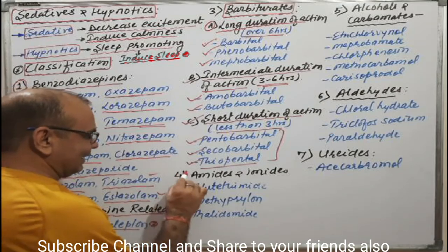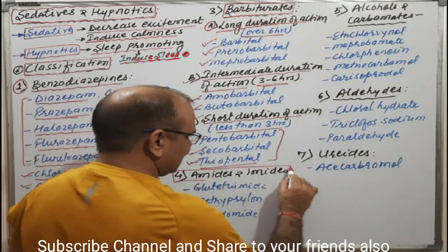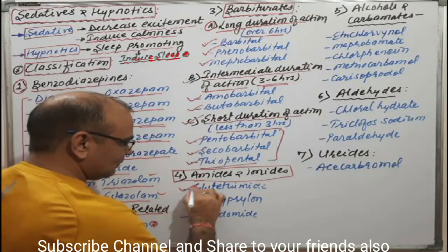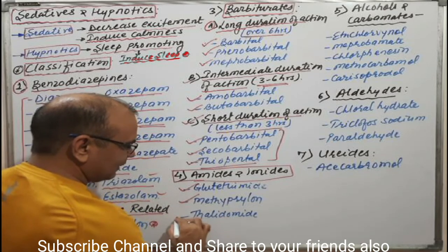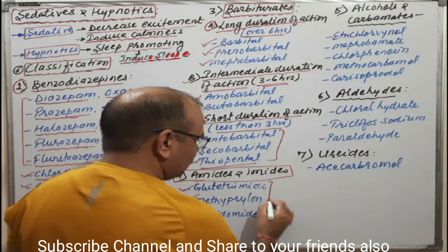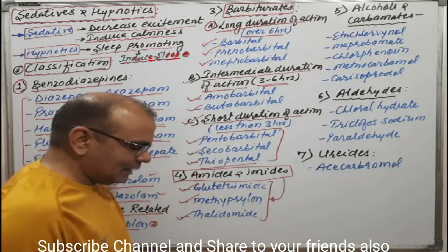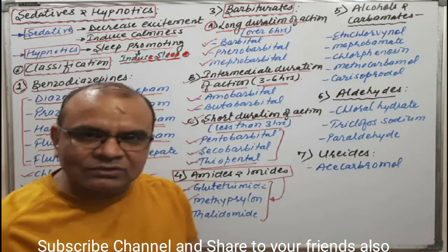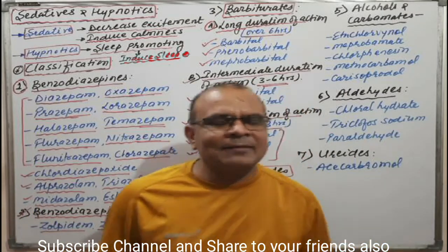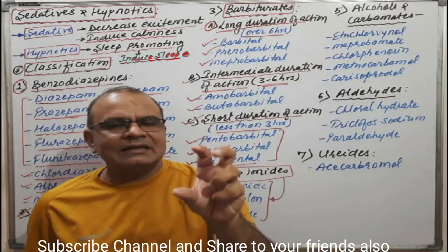The fourth chemical category is amides and imides. Examples include benzthiamide, methyprylon, and thalidomide. I will explain how they are amides, how they are imides, and what the thalidomide tragedy was in the next step.